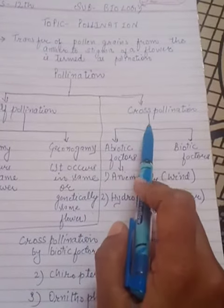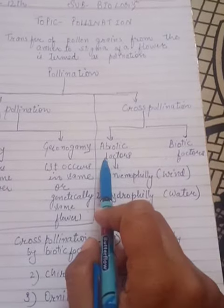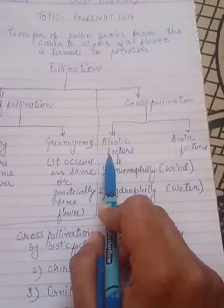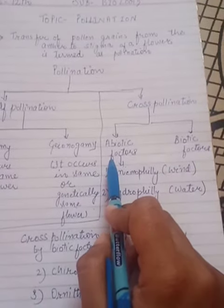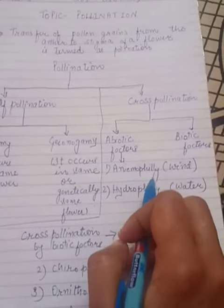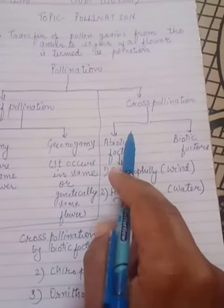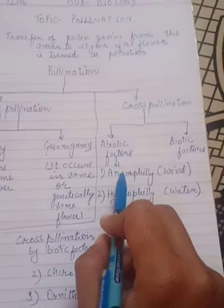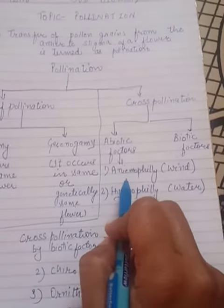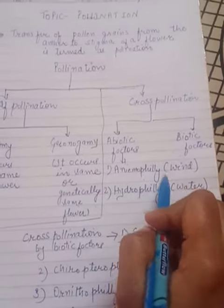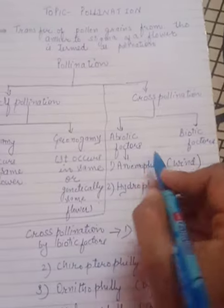Now another is cross-pollination. Cross-pollination depends upon two factors: one is abiotic factors and another is biotic factors. Abiotic factors include wind, water, and sunlight. Two types of cross-pollination occur with the help of abiotic factors: anemophily by wind and hydrophily by water.